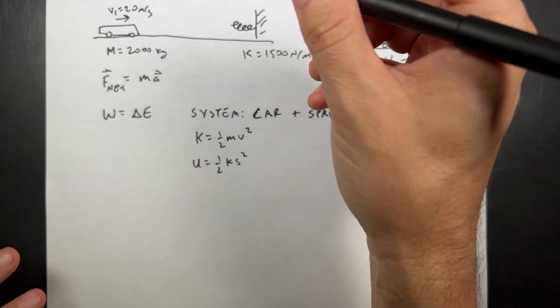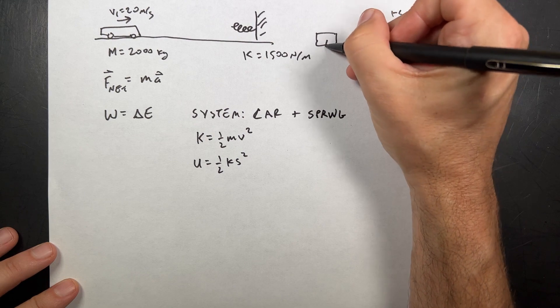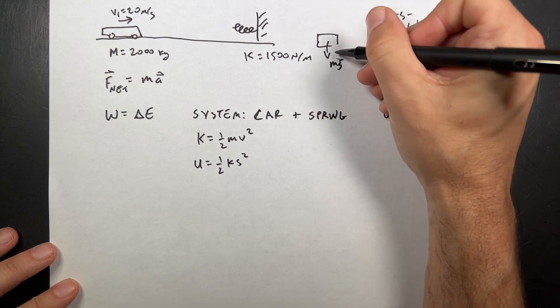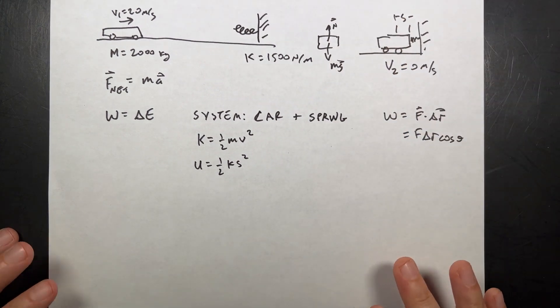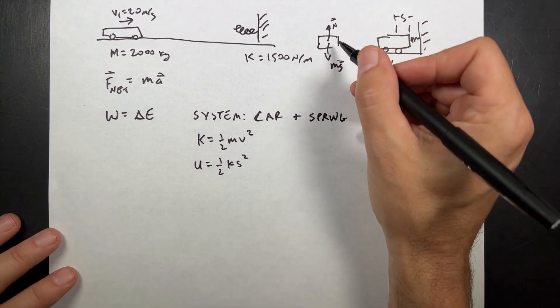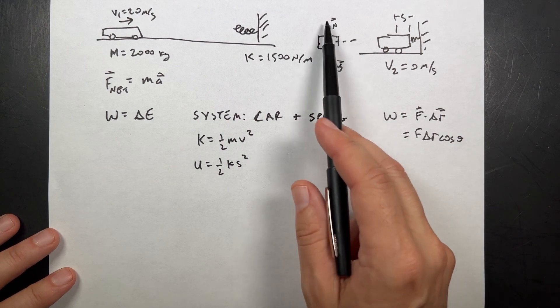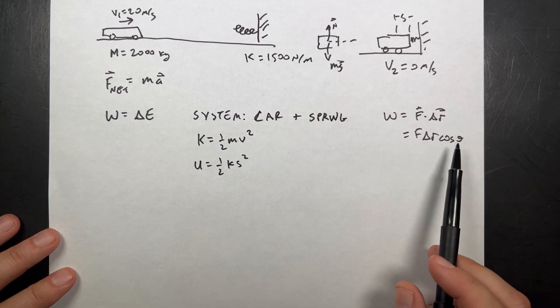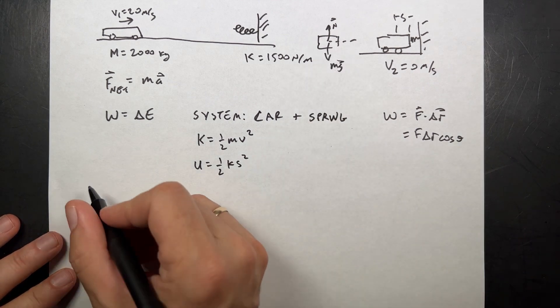what's going to do work on the car? Well, there is a downward gravitational force, mg, and there is an upwards normal force, n. Both of those are acting on the car the whole time. However, the car is only moving this way. So both of the angles for the work done by the gravity and the normal force are 90 degrees, and the cosine of 90 is zero. So, these don't do any work, the total work is zero.